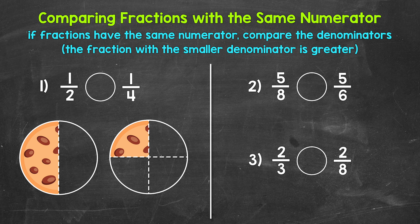Let's jump into number one, where we have 1 half and 1 fourth. Reading this comparison from left to right, we have: is 1 half greater than, less than, or equal to 1 fourth? If fractions have the same numerator, all we have to do is compare the denominators — the bottom numbers. The fraction with the smaller denominator is greater.